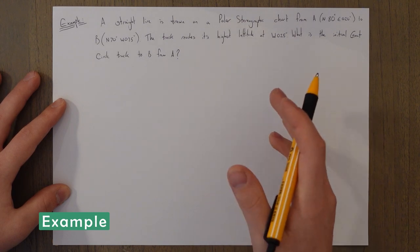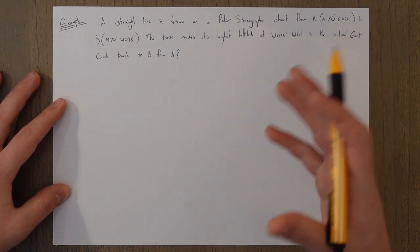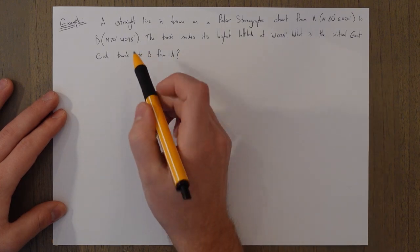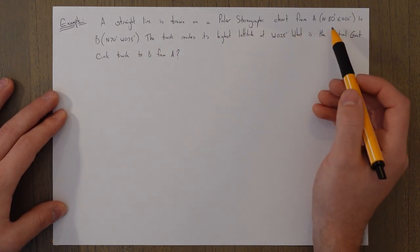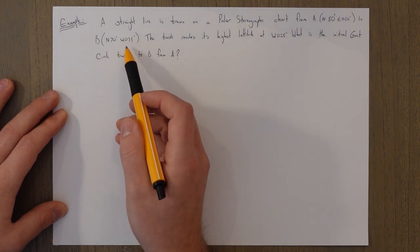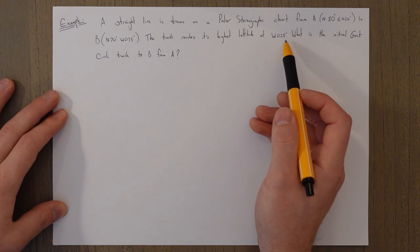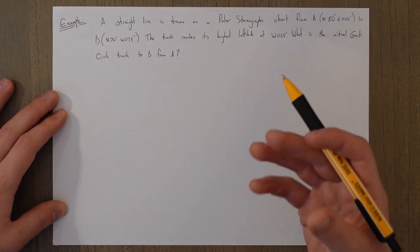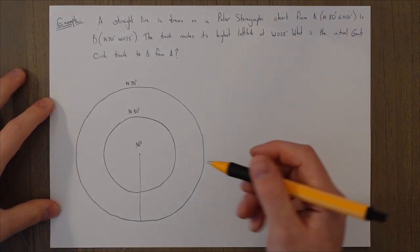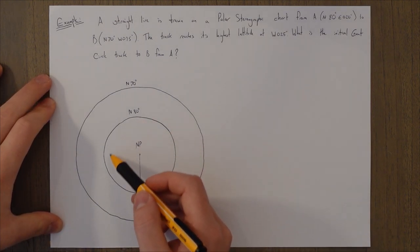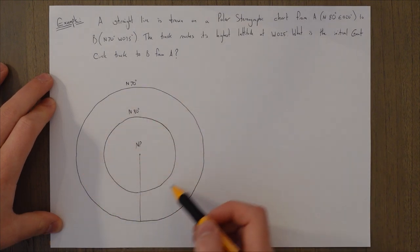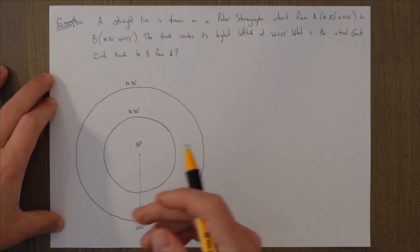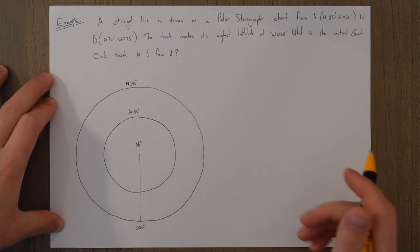Let's take a quick look at an example. It uses a few different concepts and should hopefully explain things more clearly, giving you an idea of the sort of question you'll get in the exams. A straight line is drawn on a polar stereographic chart from point A (north 80, east 20) to point B (north 70, west 95). The track reaches its highest latitude at west 025. What is the initial great circle track to B from A? First things first, draw the picture. I've drawn concentric circles for the latitude — north 80 for A and north 70 for B — along with a zero prime meridian line to help with calculations.